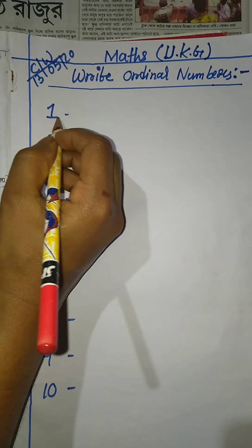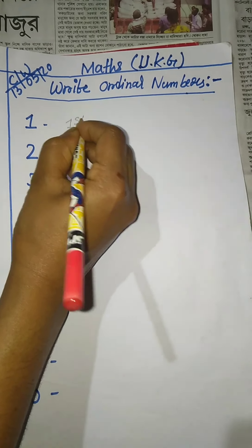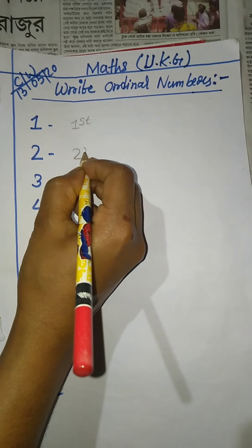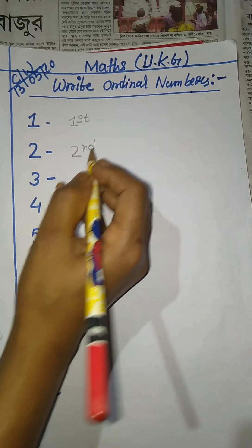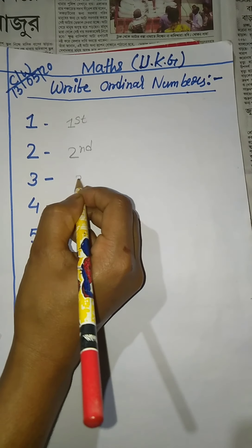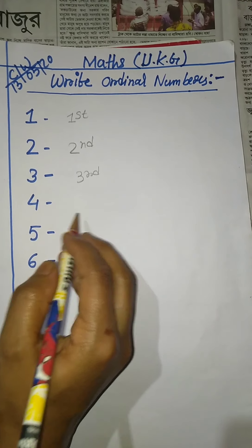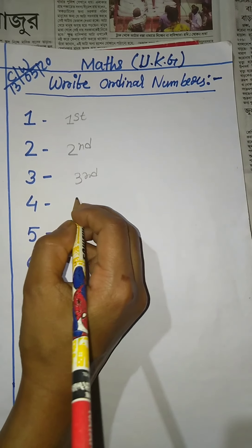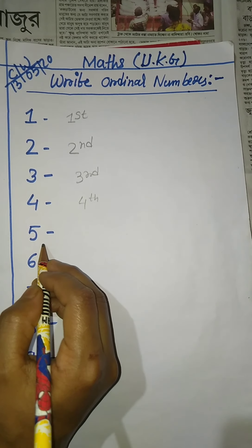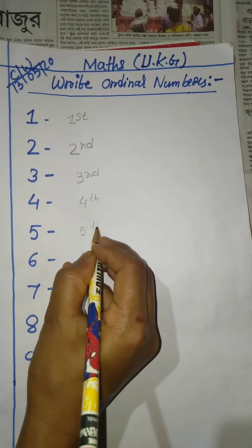So, one — the ordinal number is first. One is first. Two — the ordinal number is second. Three — the ordinal number is third, three-r-d. Four ordinal number is fourth. Five ordinal number is fifth.